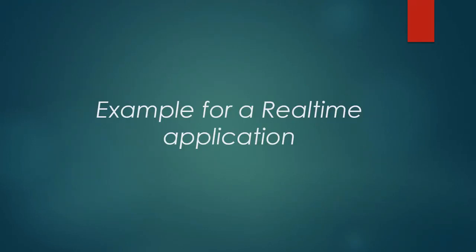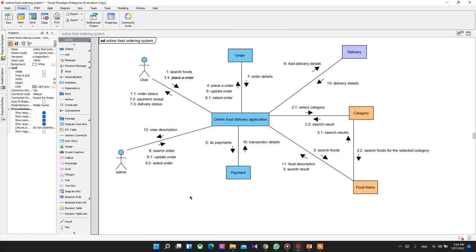Now I'm going to show a real-time application of this collaboration diagram. I'm creating a collaboration diagram for an online food delivering system. This is the collaboration diagram — also called a communication diagram — which I have drawn using the tool Visual Paradigm. The basic design includes the delivering application, and the actors are the user and the admin.